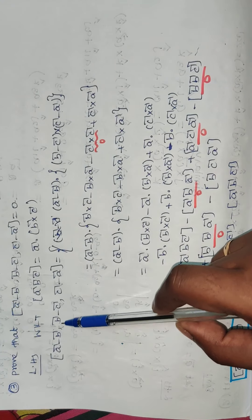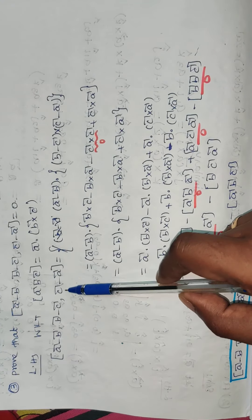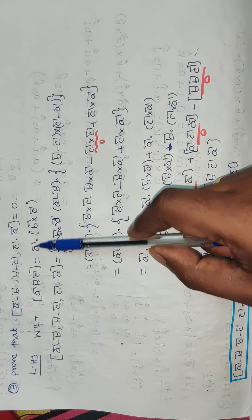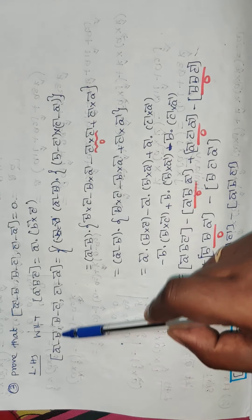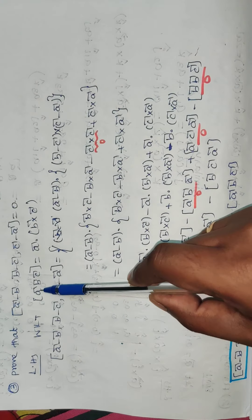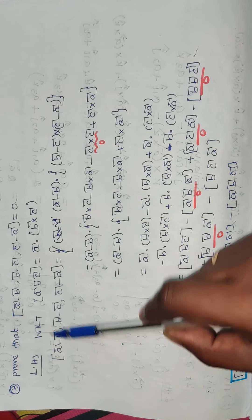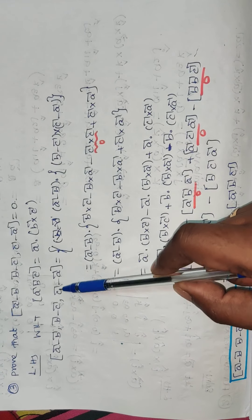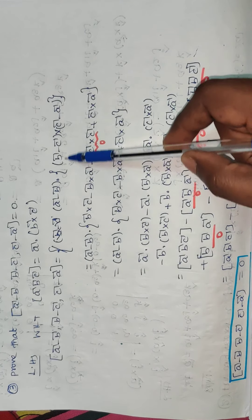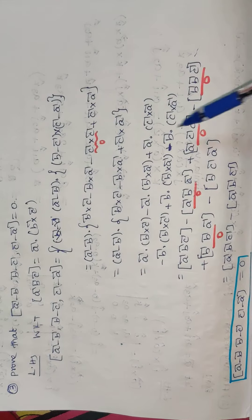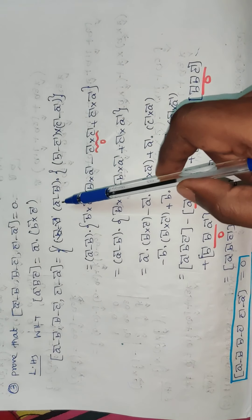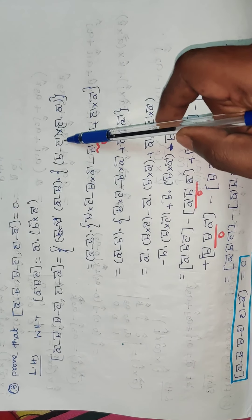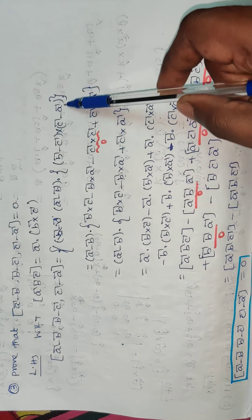Now here, box [a-b, b-c, c-a] is equal to — remember — (a-b) dot (b-c) cross (c-a). So we write: (a minus b) dot [(b vector minus c vector) cross (c vector minus a vector)].